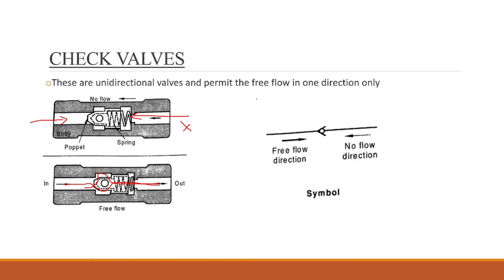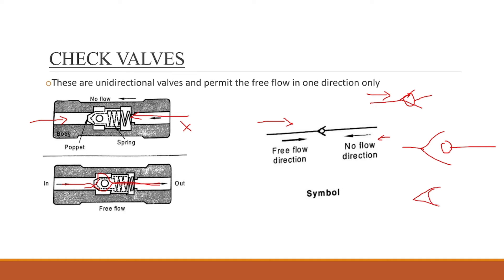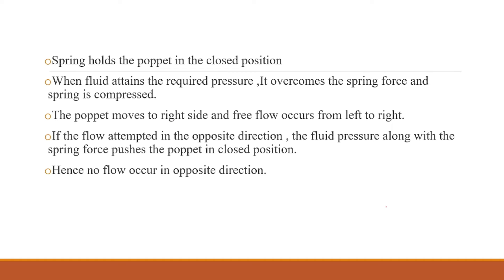The check valve is represented by a symbol in the circuit diagram. The symbol shows that flow is allowed in one direction but blocked in the opposite direction. The spring holds the poppet in the closed position. When incoming pressure overcomes the spring force, the spring is compressed and the poppet opens.